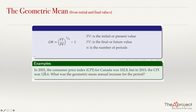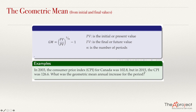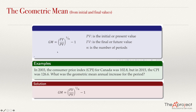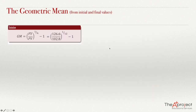For example, in 2003 the Consumer Price Index (CPI) for Canada was 102.8, and in 2015 the CPI was 126.6. What was the geometric mean annual increase for the period? The final value is 126.6 and the present value is 102.8. The number of periods between 2003 and 2015 is 2015 minus 2003, which equals 12. So n equals 12. The formula gives: 126.6 divided by 102.8, raised to the power 1 over 12, minus 1.